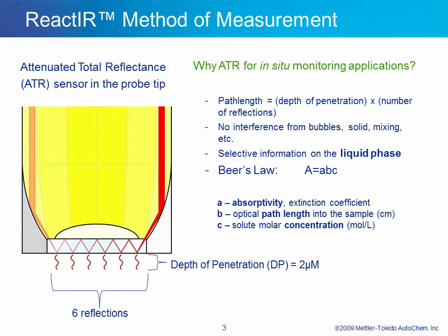I will cover the method of measurement briefly. For those that want more detail, please visit the reaction analysis page on mt.com. The technique used in our sampling technology is attenuated total reflectance, commonly referred to as ATR. ATR works on the principle of Snell's Law, where each reflection is actually an interrogation point of the sample matrix. At each interrogation point, the infrared radiation penetrates into the reaction matrix only about 2 micrometers. Therefore, the path length is equal to the depth of penetration times the number of reflections. Since the infrared radiation only penetrates such a short distance, bubbles and solids do not affect the measurement.